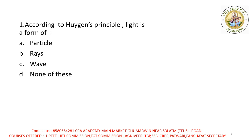Our first question is: according to Huygens' principle, light is a form of — first option: particle, second option: ray, third option: wave, and fourth option: none of these.